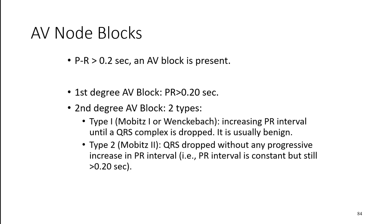Next we'll get into the AV node blocks. The AV node is a site of major delay, and the interval we'll look at in terms of the integrity of the AV node is the PR interval. The PR interval represents the time it takes for a signal to pass through the AV node — typically from the SA node, through the internodal tracts, through the AV node, into the ventricles. So if the PR interval is prolonged, there's probably some delay or blockage occurring at the AV node.